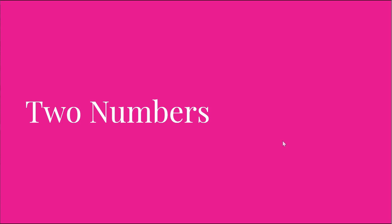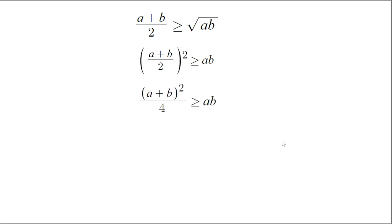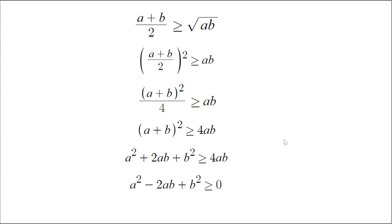If you haven't heard of the inequality before, this seems kind of unbelievable — I didn't really believe it back when I first saw it — but let's change that by first proving it for two numbers. We'll start with the thing we want to prove: (a + b)/2 ≥ √(ab). We can square both sides because square roots are annoying, then do the square on the numerator and denominator separately, then multiply by 4, then distribute the (a+b)² to get a² + 2ab + b². Then we subtract 4ab from both sides and factor to get (a−b)² ≥ 0. This is true because all squares are greater than or equal to zero, so we've proved it. Note this only works if a and b are positive because of all the squaring and square rooting.